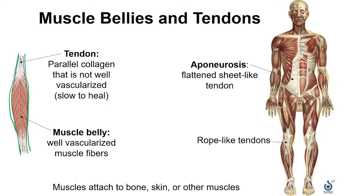The parallel collagen in the tendon gives it a shiny white appearance. However, this is not a well-vascularized area, so tendons can be slow to heal when there is an injury.